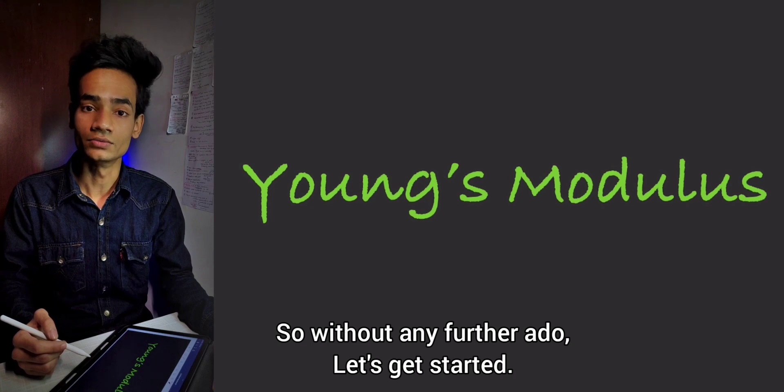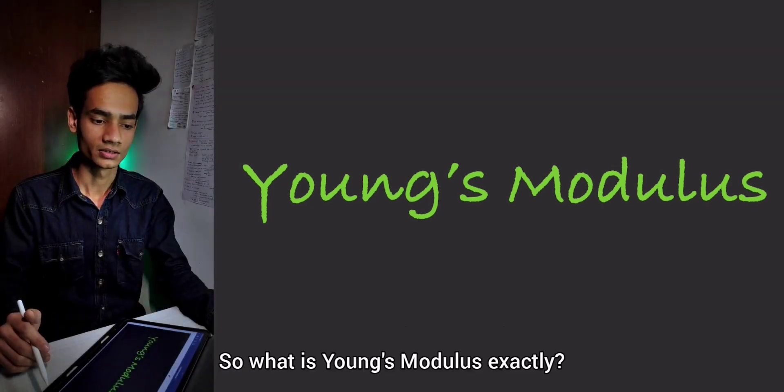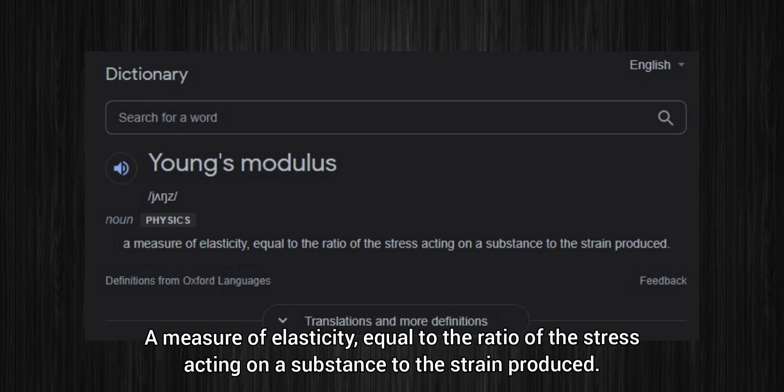So without any further ado, let's get started. So what is Young's modulus exactly? Well, it can be defined as a measure of elasticity equal to the ratio of the stress acting on a substance to the strain produced.